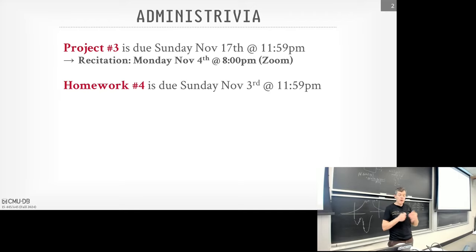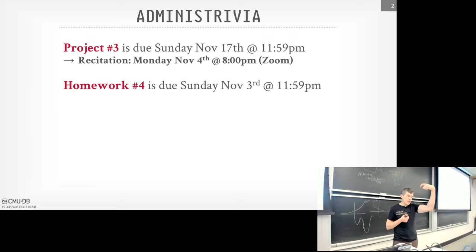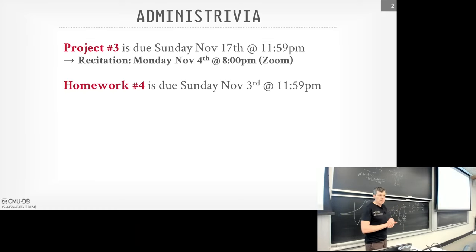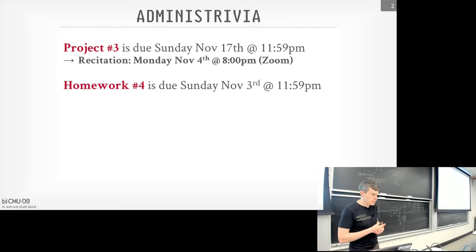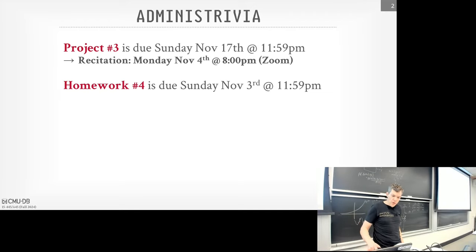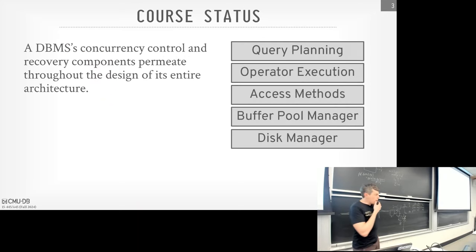Question: does Project 3 depend on Project 2? Yes - you have to do index scan and index nested loop join, which would use your B+ tree. If you can't make it concurrent, just put a fat latch on top of the whole thing. That'll be sufficient to get correctness.